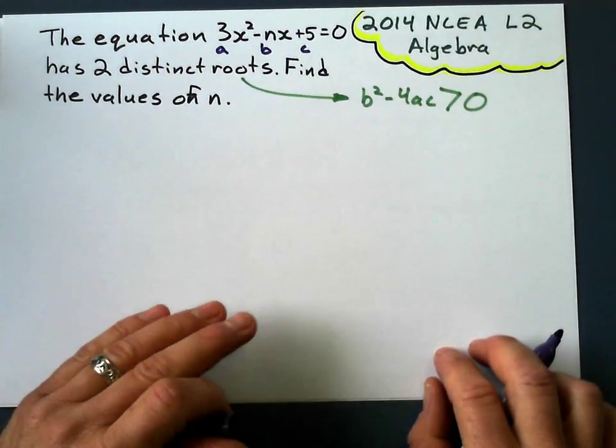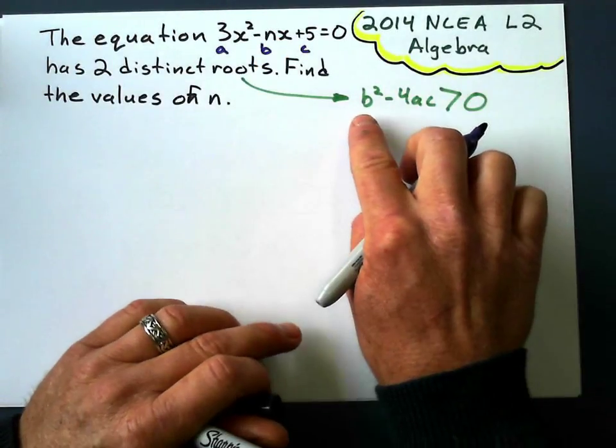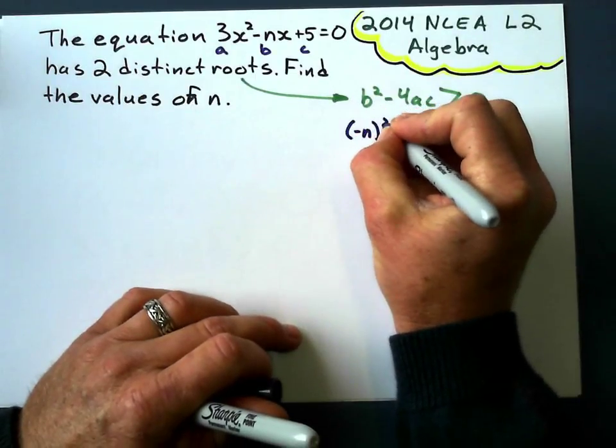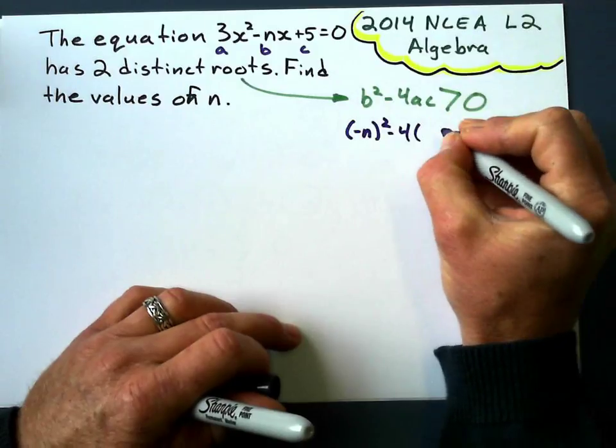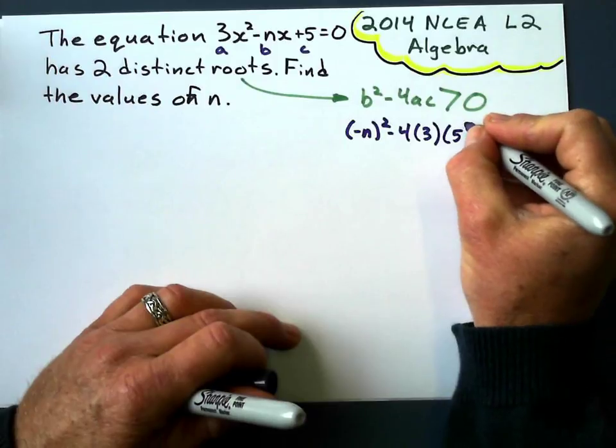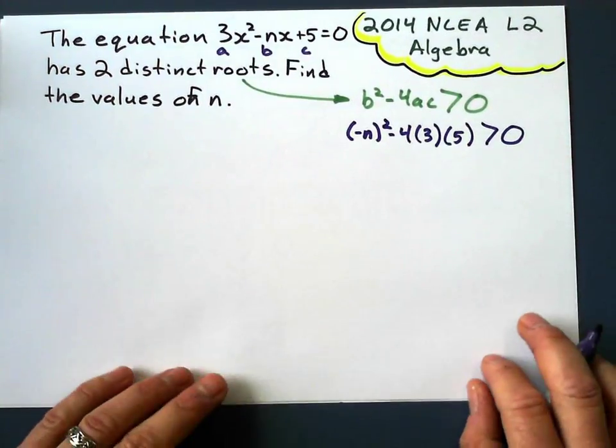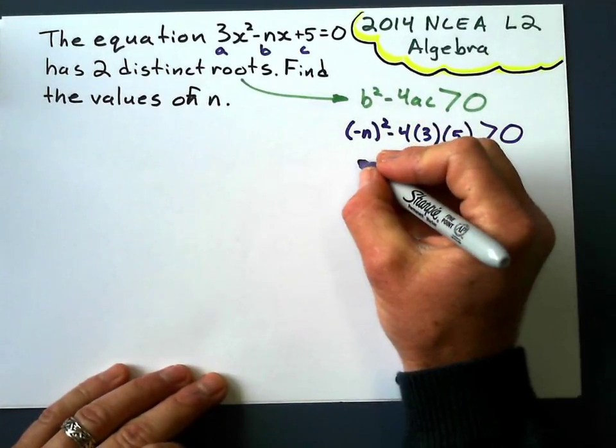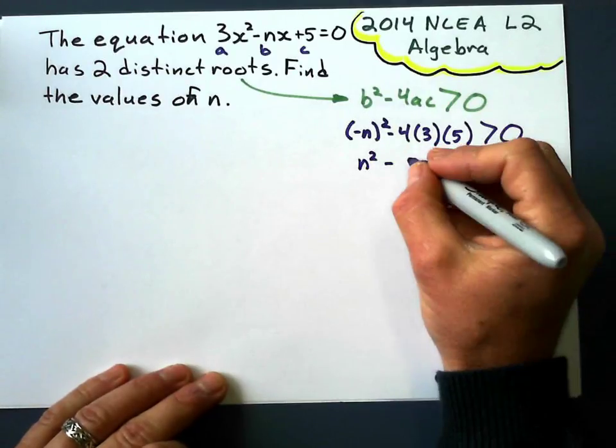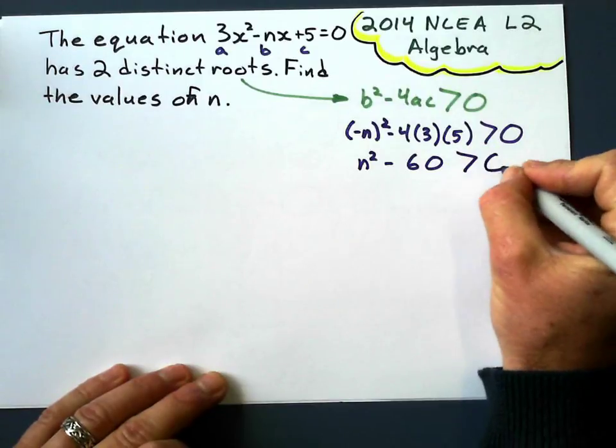All right, so we want to find the values of n here, and I can substitute everything in here. b is going to be negative n, so that means it's negative n squared, minus 4 times the value of a, which is 3, times c, which is 5, and all that has to be bigger than 0. Okay, let's simplify this: negative n squared is n², of course, minus 4 times 3 is 12, times 5 is 60, so I get n² minus 60 is greater than 0.